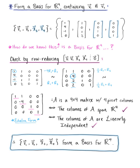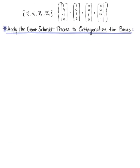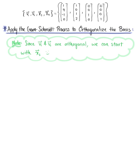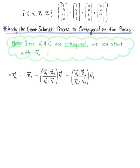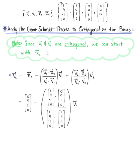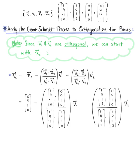Now that we have a basis for R4, we apply the Gram-Schmidt process to orthogonalize it. Since v1 and v2 are already orthogonal, we immediately start with x3. By Gram-Schmidt, vector v3 equals x3 minus the projection of x3 onto v1, minus the projection of x3 onto v2.